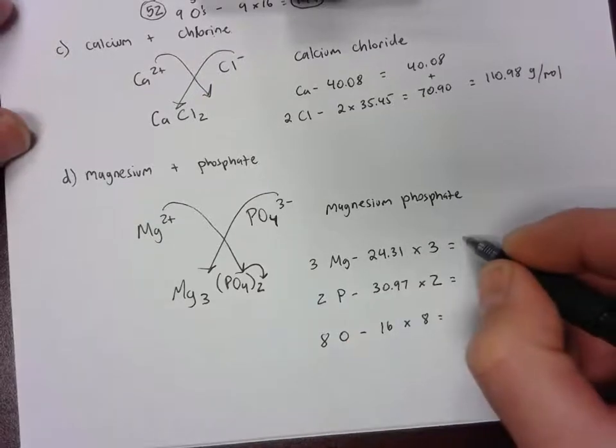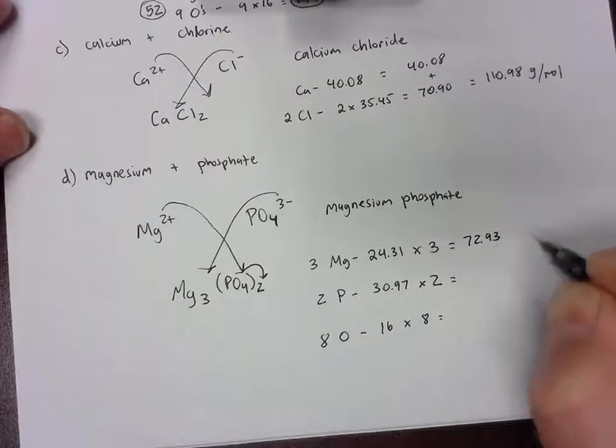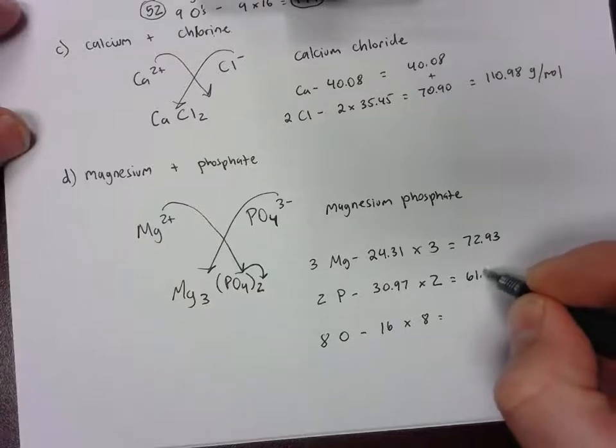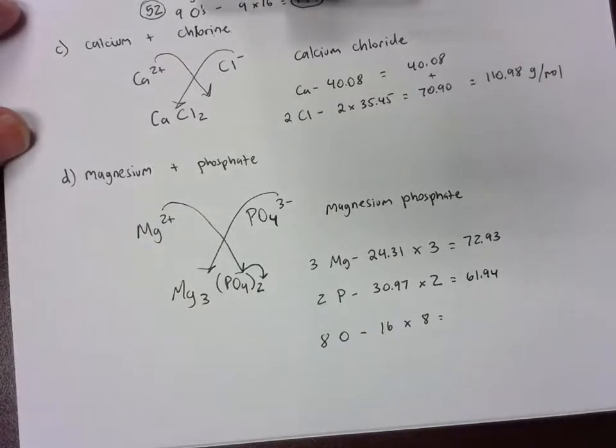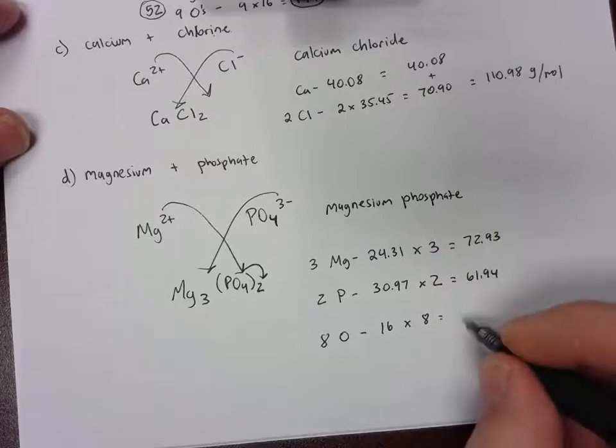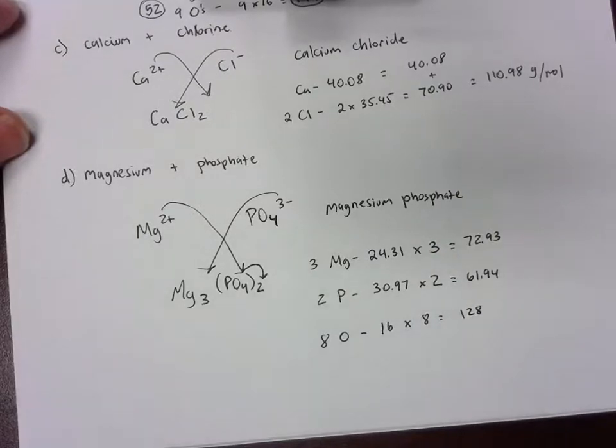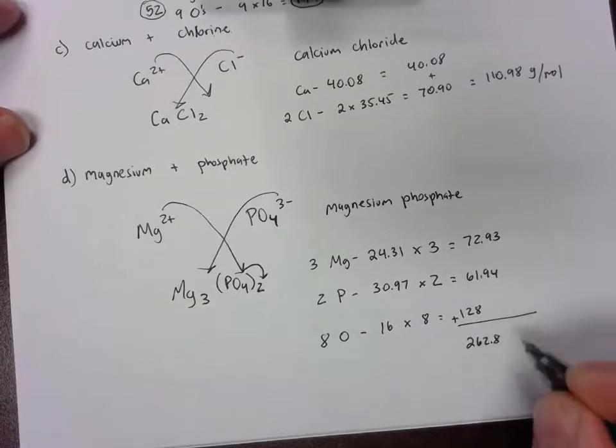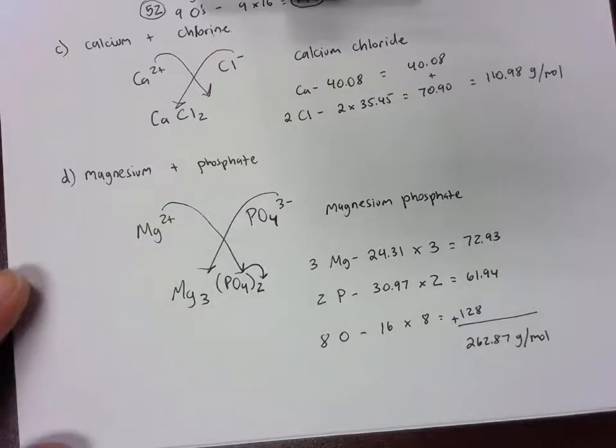This gives me 72.93 for the magnesium, and then for the phosphorous it's going to be 61.94, and then 128 for the oxygens. Add all these up and you end up with 262.87 grams per mole.